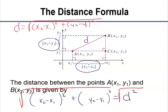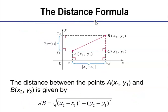All that is is the Pythagorean Theorem. Let me show you the typed version. Now, instead of calling it d, they called it AB — that just means the measure of line segment AB. But notice x₂ minus x₁ squared plus y₂ minus y₁ squared — that is your distance formula. All it is is the Pythagorean Theorem.